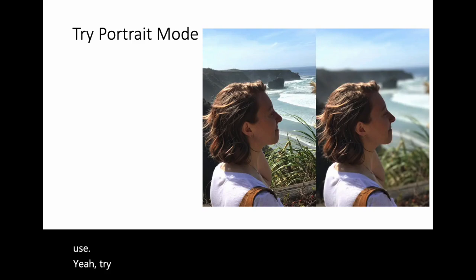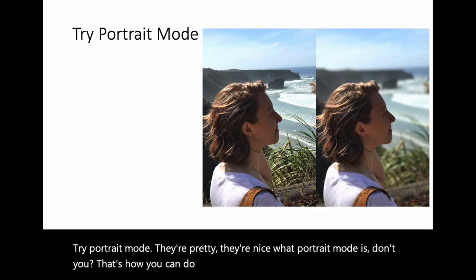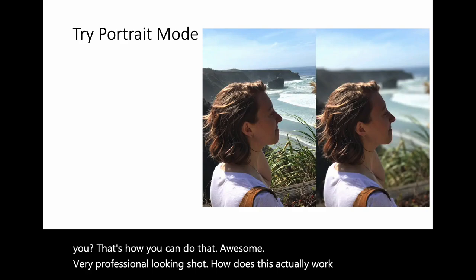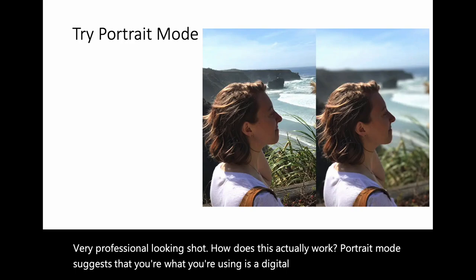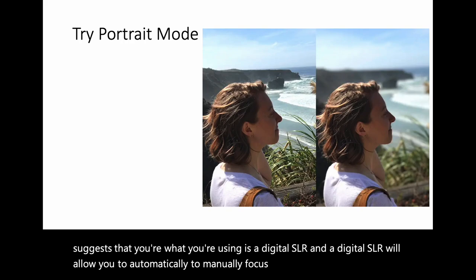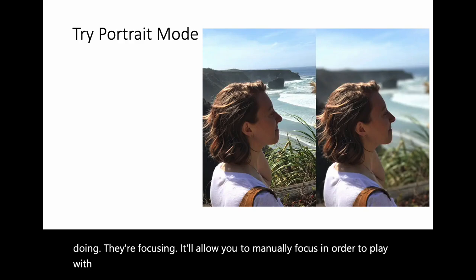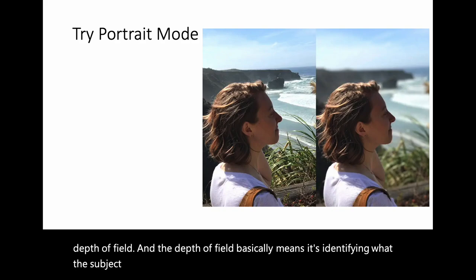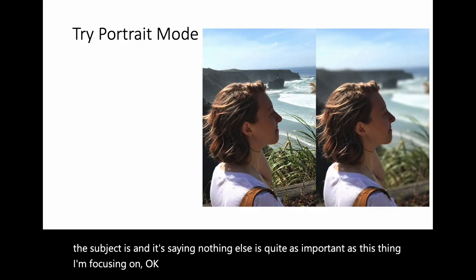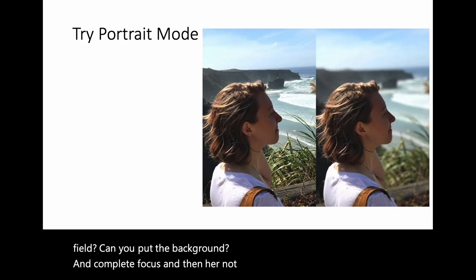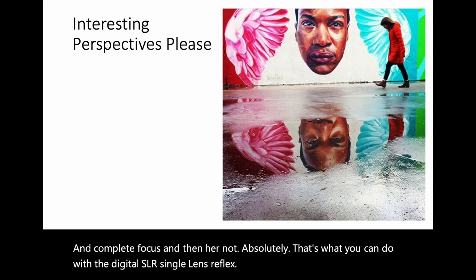Try portrait mode — it's pretty, it's nice. Portrait mode simulates what a digital SLR does: it allows you to manually focus in order to play with depth of field. The depth of field identifies the subject and says nothing else is quite as important as this thing I'm focusing on. You can also reverse it — put the background in complete focus and blur the subject. That's what you can do with a digital SLR — single lens reflex camera, the one with the big fancy lens.